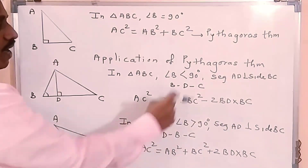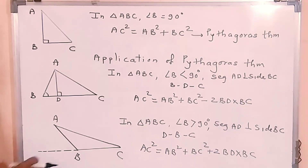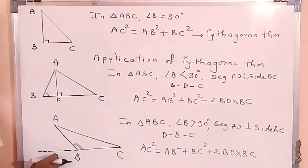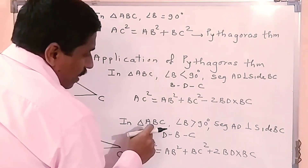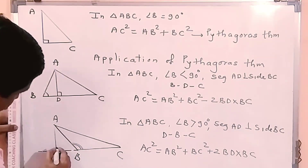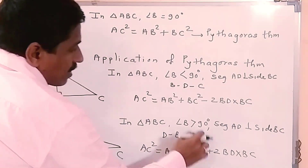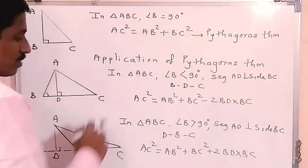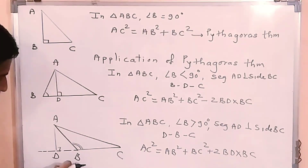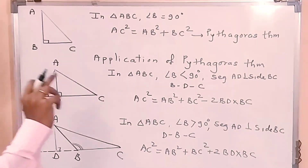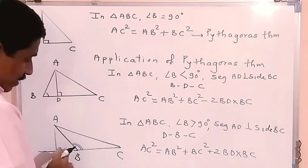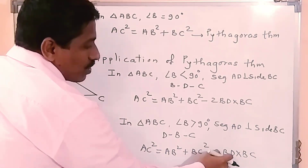One more term is added for the application of Pythagoras theorem. For the second case, if angle B is an obtuse angle in triangle ABC with angle B greater than 90 degrees, we draw perpendicular AD again. The application of Pythagoras theorem gives: AC square equals AB square plus BC square plus 2BD into BC. Remember: if it is an acute angle triangle, we subtract the term 2BD into BC; if it is an obtuse angle triangle, we add the term plus 2BD into BC.